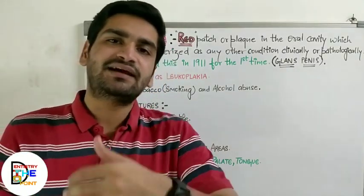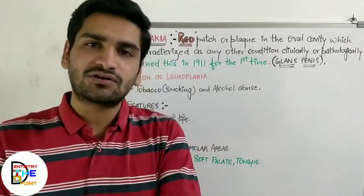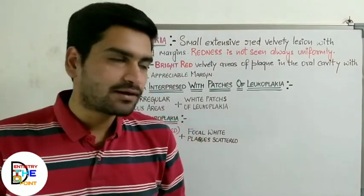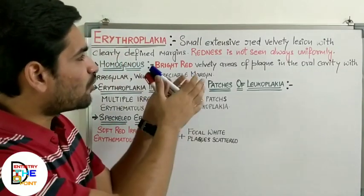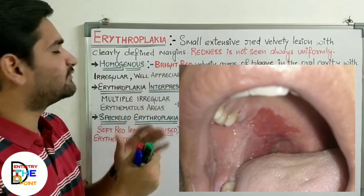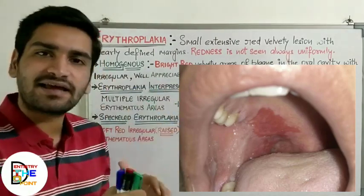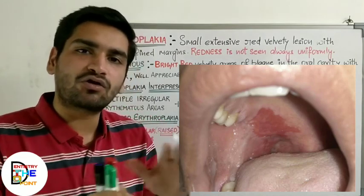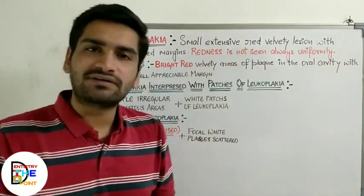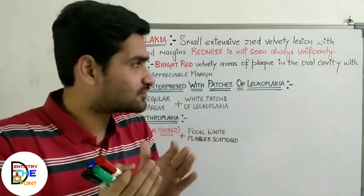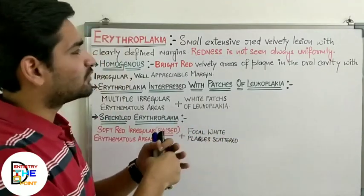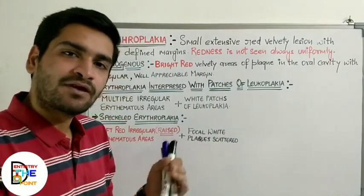Moving on to the clinical presentation of erythroplakia: it presents as a small but extensive red velvety lesion with clearly defined margins. The margins are irregular and not uniform, but you can easily demarcate the lesion from normal tissue. Redness is not always seen uniformly — in some areas it is very red, in others less so. It presents as a small extensive red velvety lesion with well-defined margins.